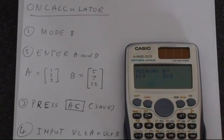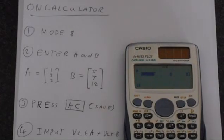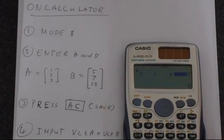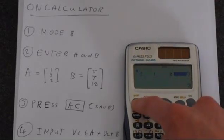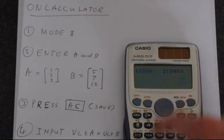And there's 3 elements, so we're going to choose 3. And then 1, 2, 3. And then we press shift 5, then data.